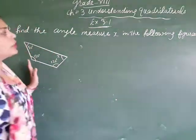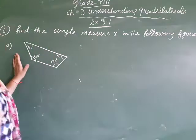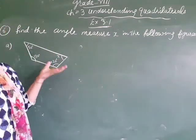Our sixth question: you have to find the angle measure x in the following figure. You have a polygon in which one angle is missing, that is x. You have to find that angle.